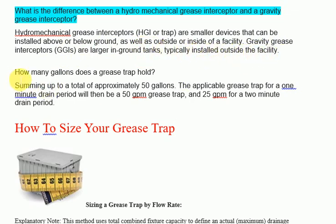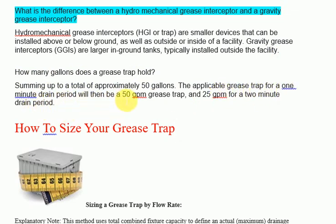How many gallons does a grease trap hold? Summing up to a total of approximately 50 gallons, the applicable grease trap for a 1-minute drain period will be a 50 GPM grease trap, and 25 GPM for a 2-minute drain period.